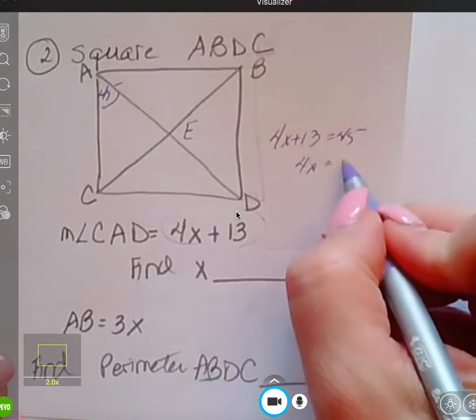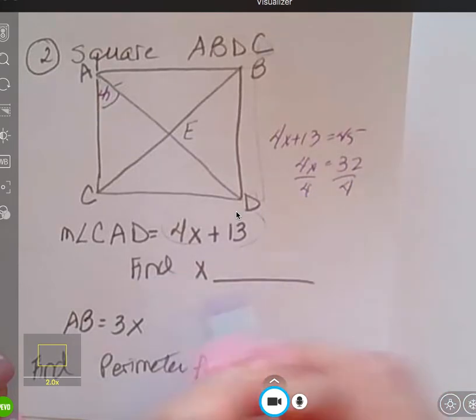45 minus 13, 32, divide by 4, and x is equal to 8.